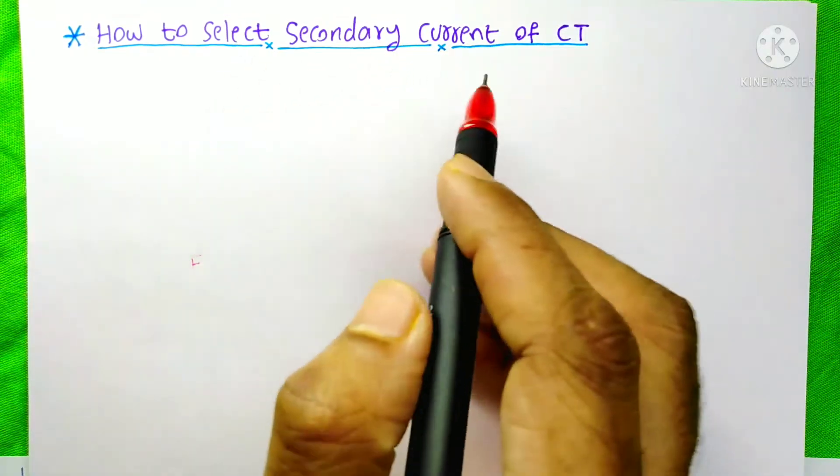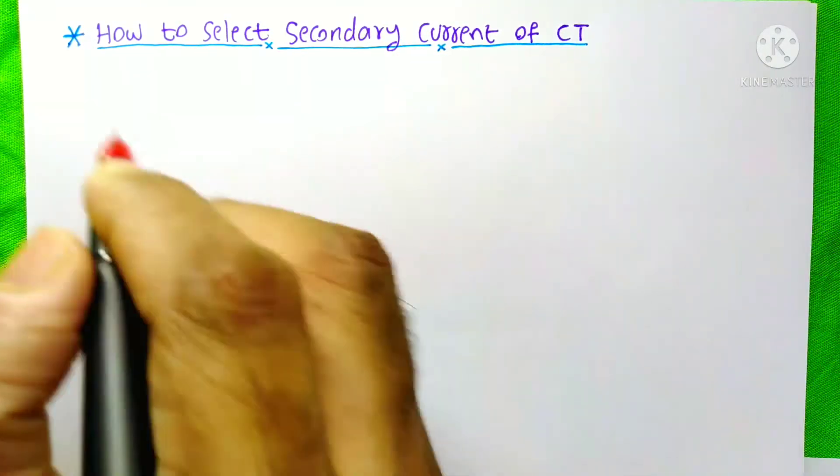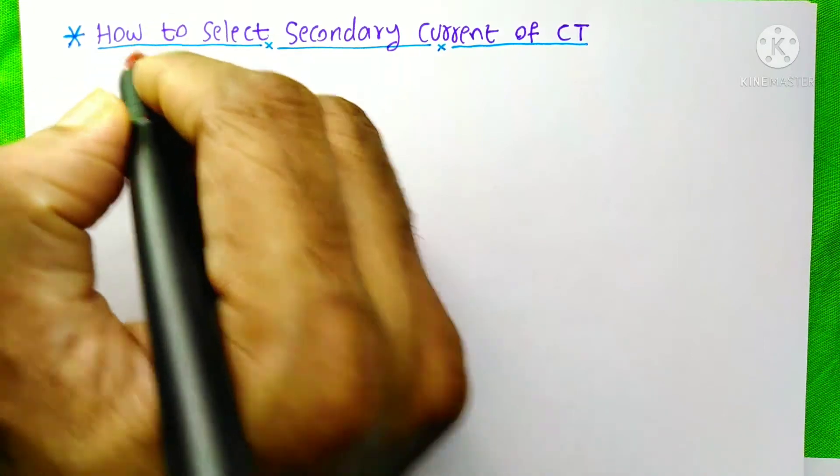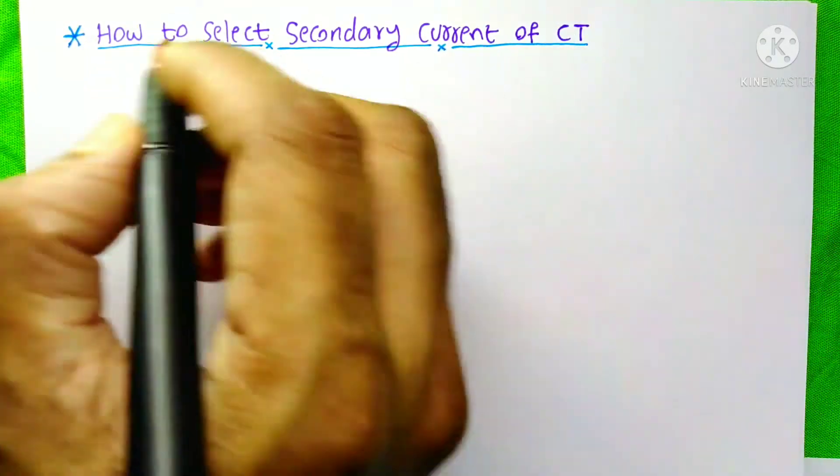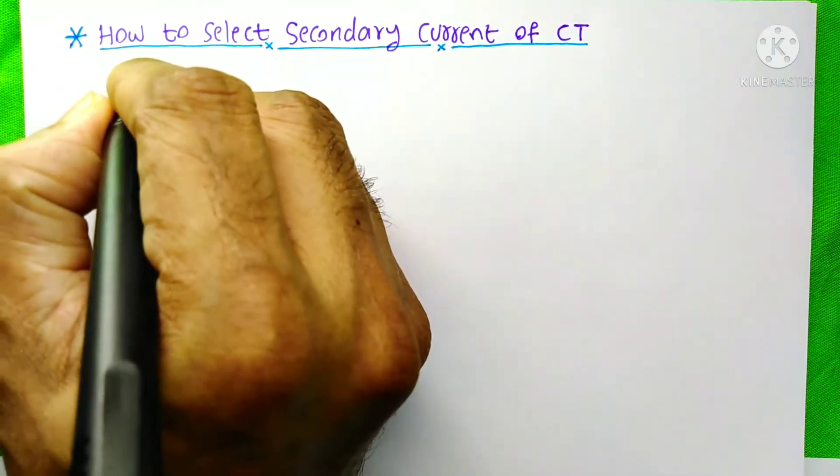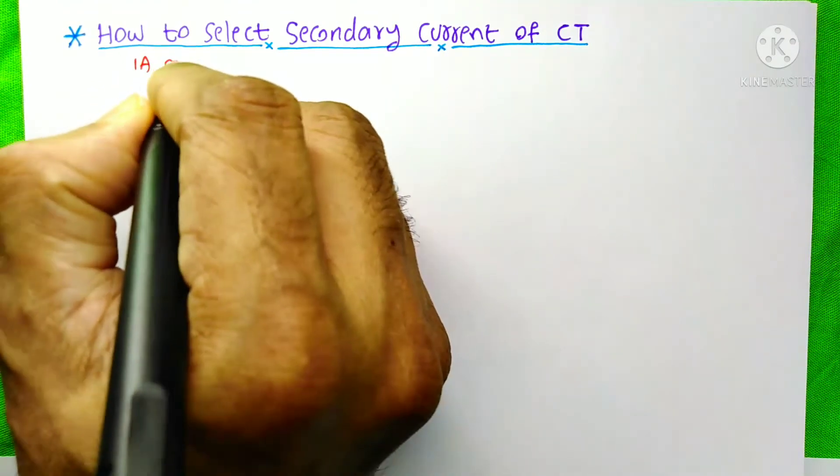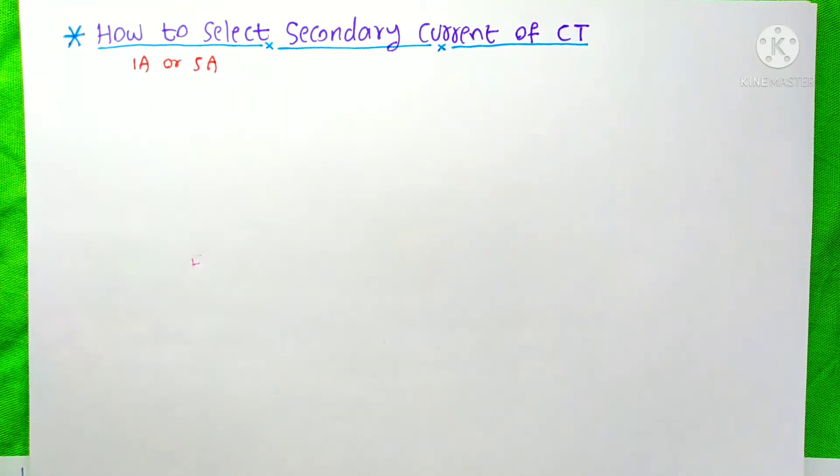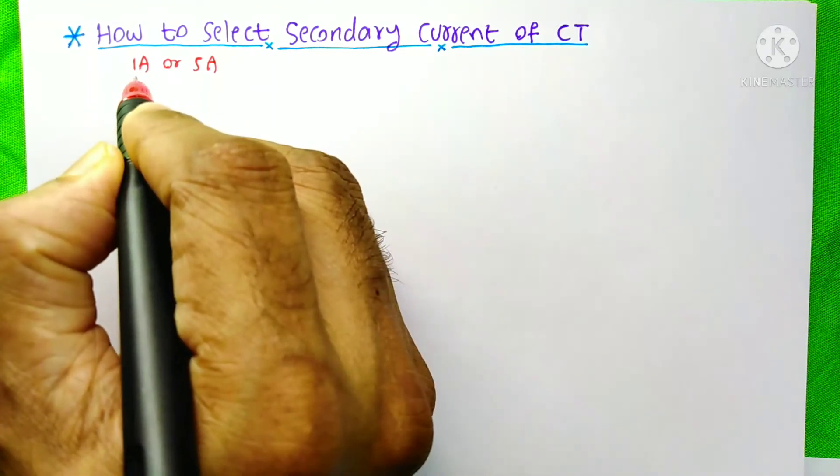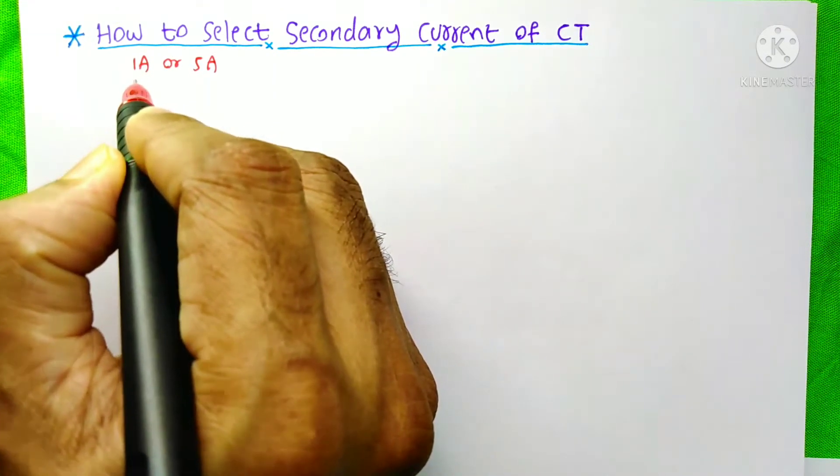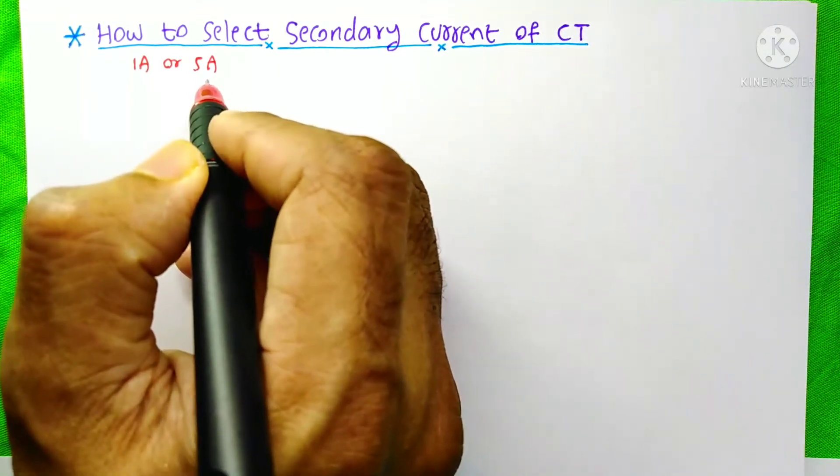How to select secondary current of CT? Current transformers always have a secondary current of either 1A or 5A. For our specific purpose, which secondary current should we select: 1A or 5A?